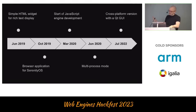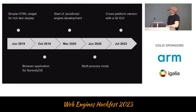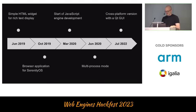A quick overview of the timeline: in June 2019, I was working on SerenityOS and wanted a rich text display widget — maybe bold text or different font sizes. I thought HTML would be a good internal representation, so I made a simple thing for that. It was fun to hack on, so I kept adding things. By October of the same year, I added a browser application — an actual GUI app called browser.